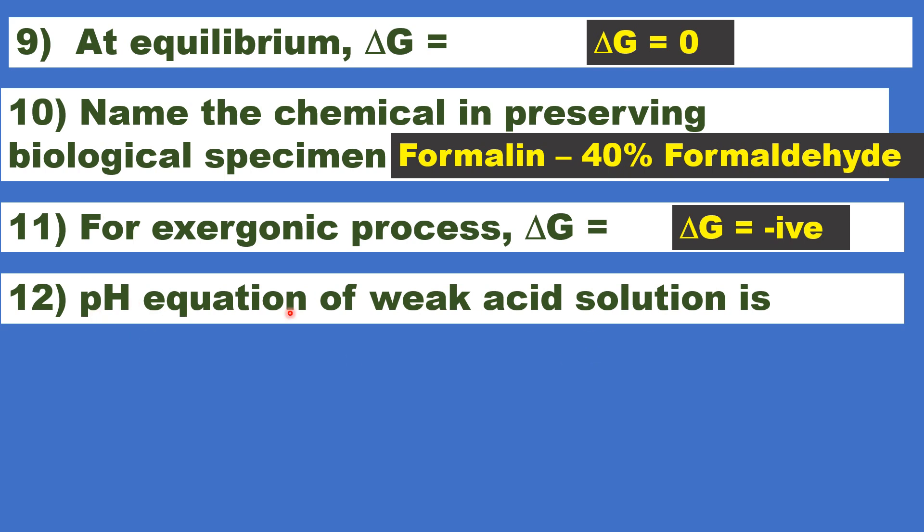The pH equation of weak acid solution is. The pH equation used to calculate the weak acid solution is pH equal to negative log to the base 10 of alpha C, where alpha is the degree of dissociation. It is the fraction of acid, weak acid dissociated. Fraction of acid dissociated alpha, not percentage. C is the concentration of the weak acid in the solution.